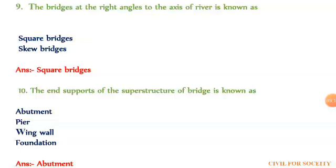The tenth question: the end support of a superstructure of a bridge is known as. The first option is abutment, second is square, third is well wall, and fourth is foundation. The correct answer is abutment.